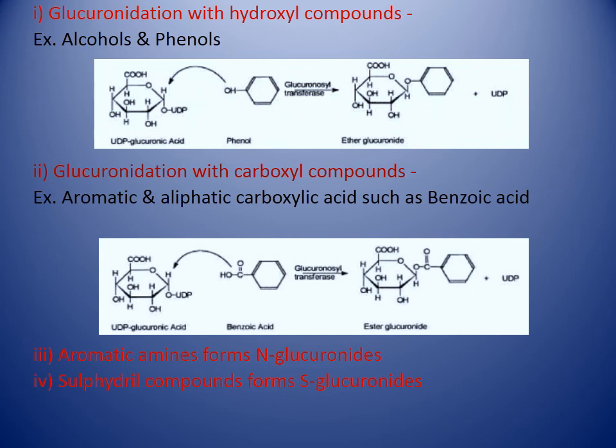Coming to glucuronidation with hydroxyl compounds — example, alcohols and phenols. The example of phenol is shown here. When phenol gets conjugated with UDP-glucuronic acid, UDP is removed from UDP-glucuronic acid and hydrogen is removed from the phenol, and the phenol gets directly attached to the glucuronic acid to form an ether glucuronide. It is important to note that alcohols and phenols undergo glucuronidation to form ether glucuronides.